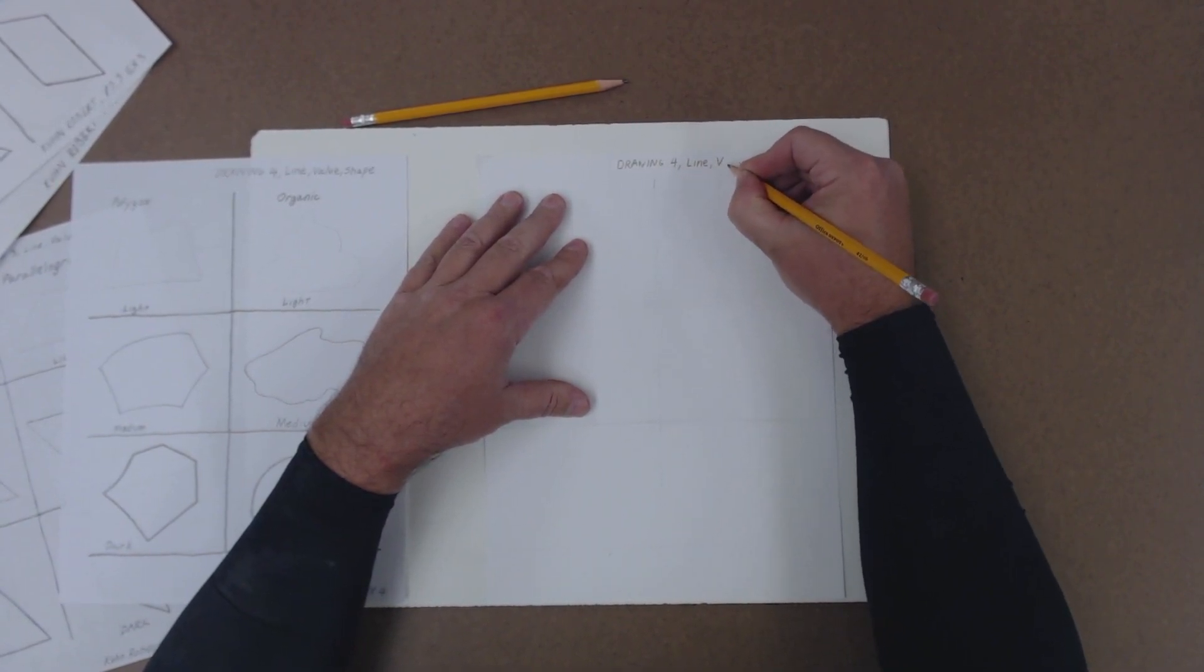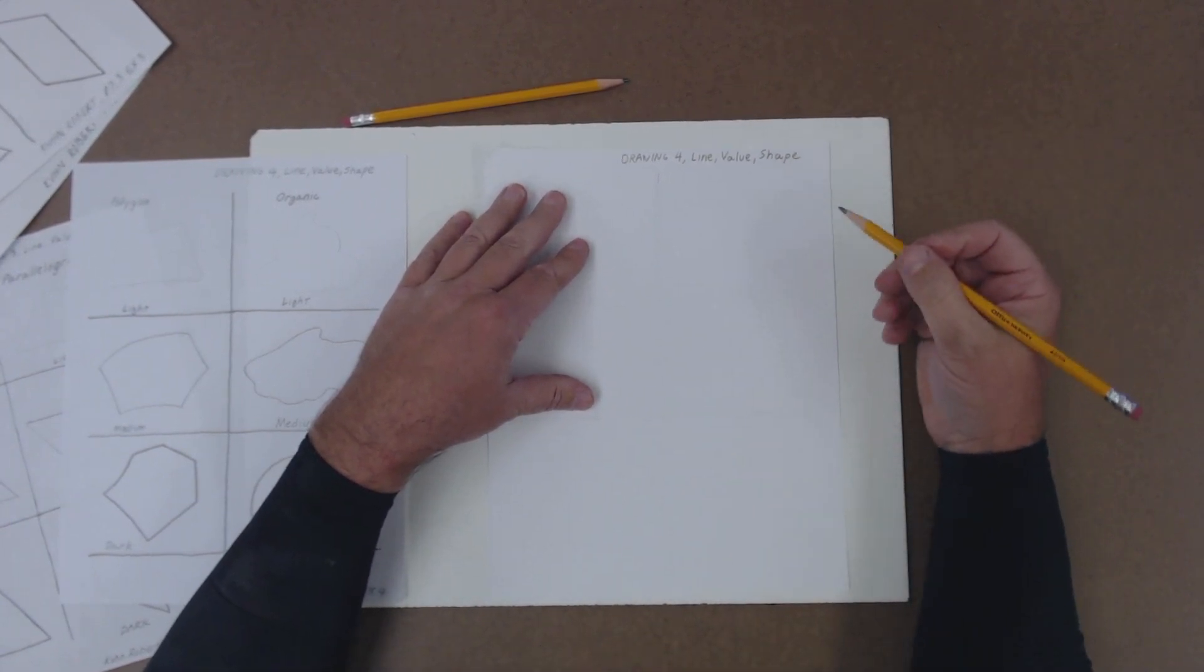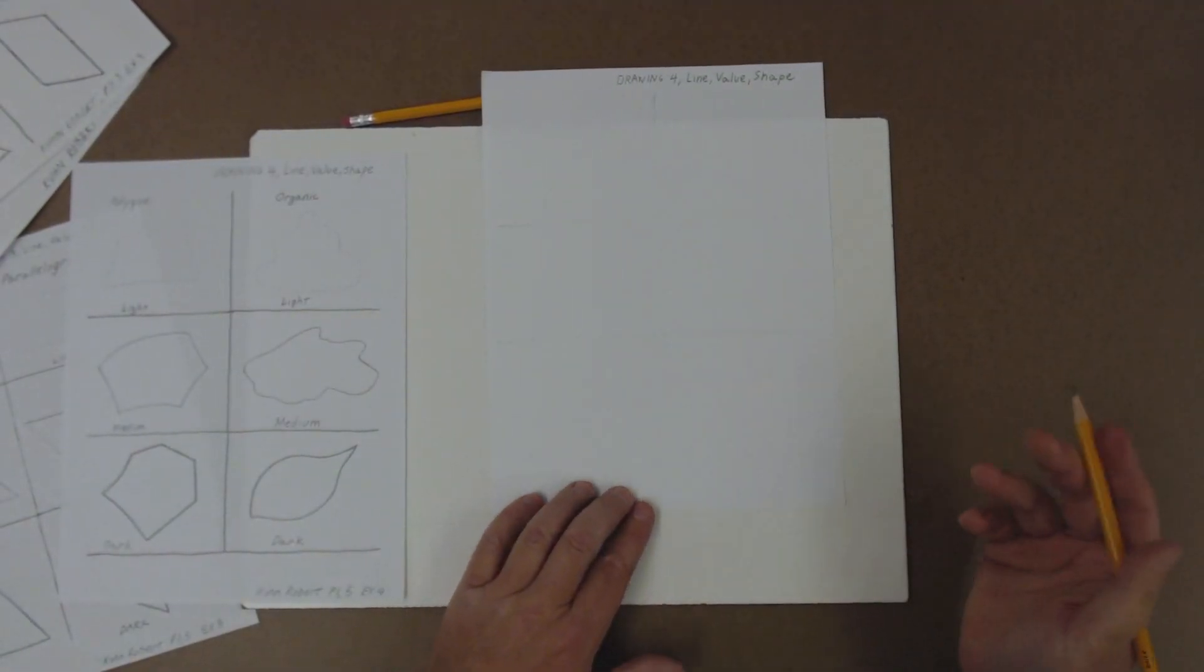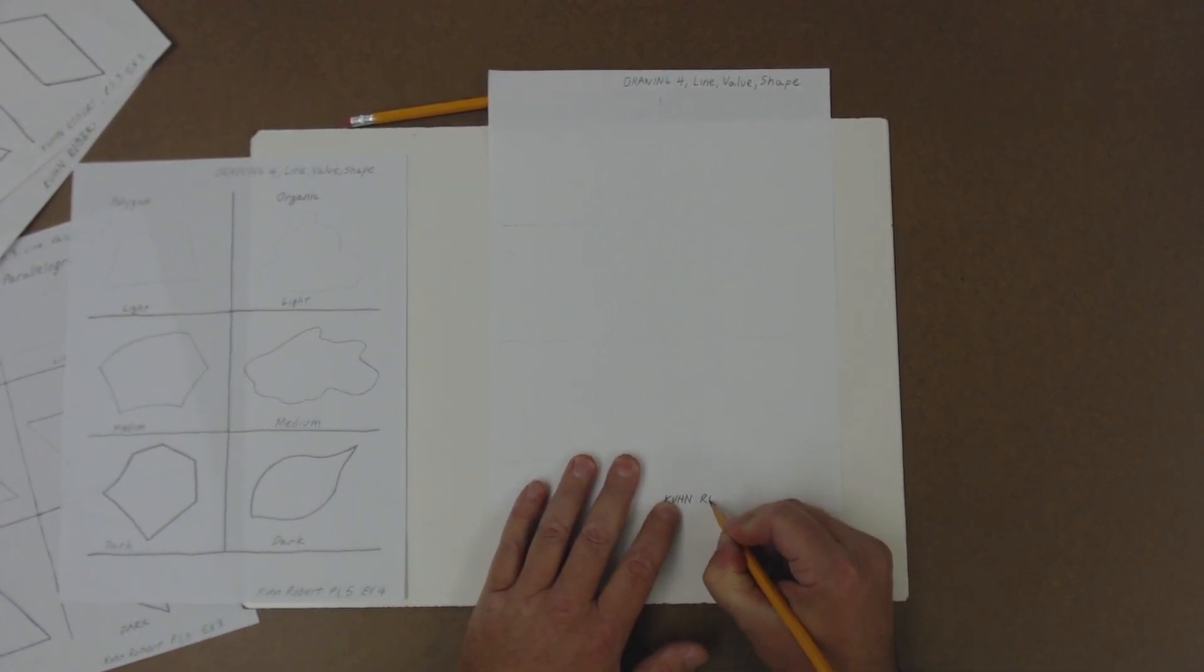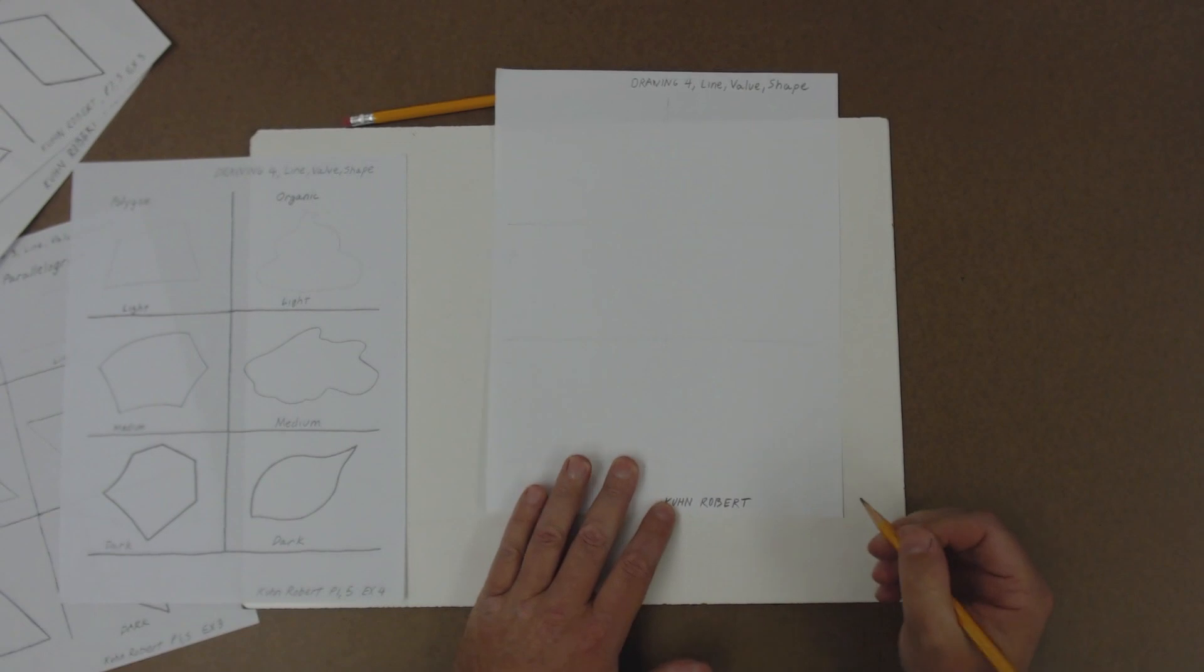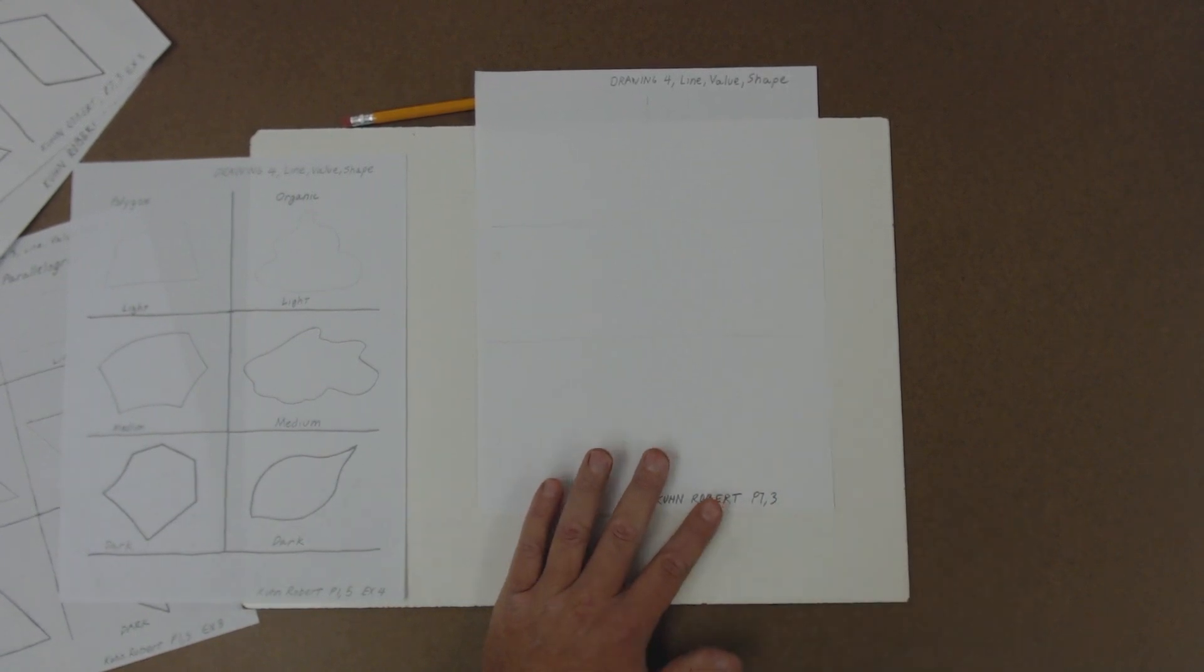And what does this have to do with? Well, it has to do with line. It has to do with value, how dark or light things are. And what we're really focusing on now is shape. You're going to see, because things are going to get a lot more complicated real soon, that shape is your friend. Break things down into shape. Label everything. Put your last name and your first name. Then we've got period. Period 7 and period 3.